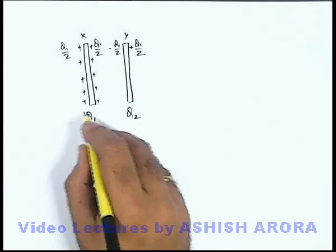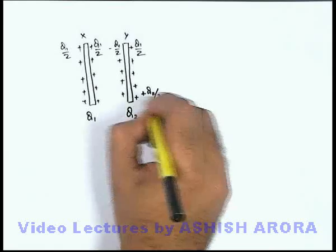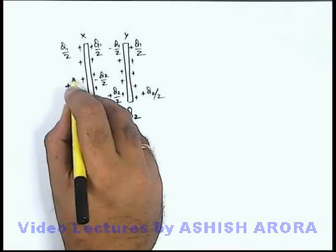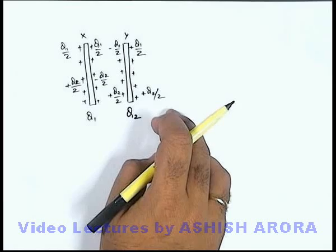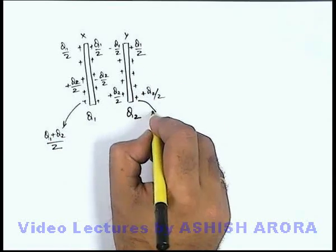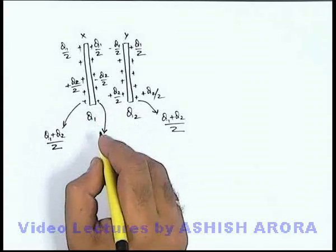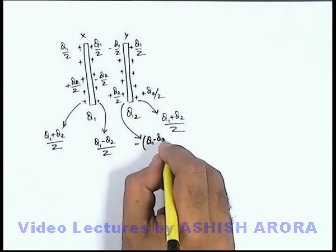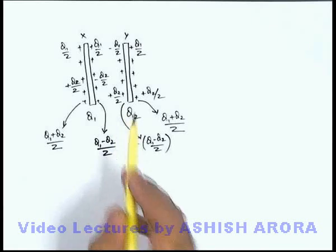Now consider Q2 alone: it distributes as Q2/2 and Q2/2 on the two faces of plate Y, inducing minus Q2/2 and plus Q2/2 on plate X. When both charges are present simultaneously, the final distribution is: the leftmost face of plate X carries (Q1+Q2)/2, the rightmost face of plate Y carries (Q1+Q2)/2, the inner face of plate X carries (Q1−Q2)/2, and the inner face of plate Y carries −(Q1−Q2)/2. We confirm that facing surfaces carry equal and opposite charges.